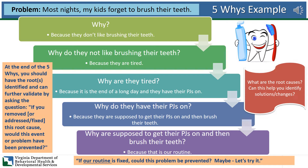At the end of the five whys, you should have the root cause or causes identified. You can further validate this by asking: if you removed, addressed, or fixed this root cause, would this event or problem have been prevented? So let's check that here. If our routine is fixed, could this problem be prevented? Well, maybe — that sounds like a pretty good solution. So let's try it.